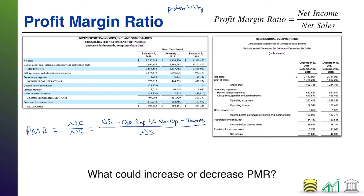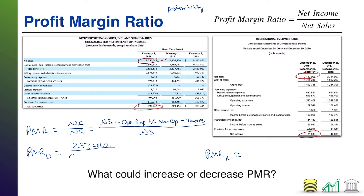Let's calculate this for Dick's Sporting Goods and REI. I'll call them PMR-D for Dick's and PMR-R for REI. We can pull these numbers straight from the financial statements using the most recent year for both companies. For Dick's: net income of 297,462 over net sales of 8,750,743.